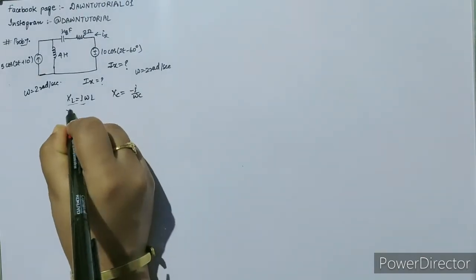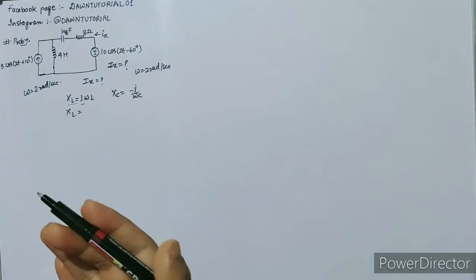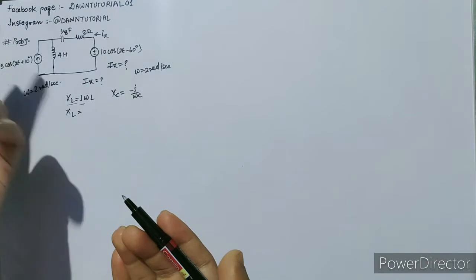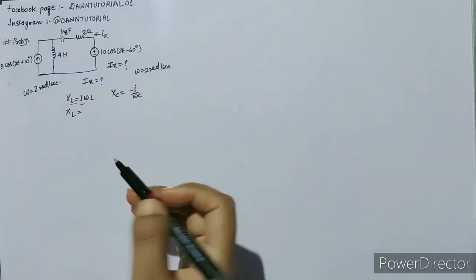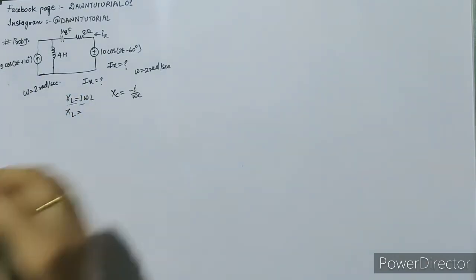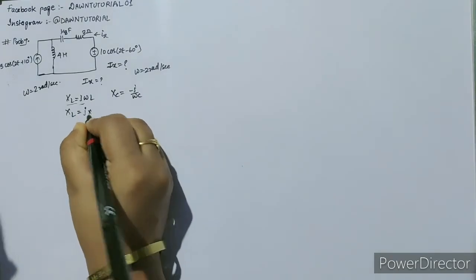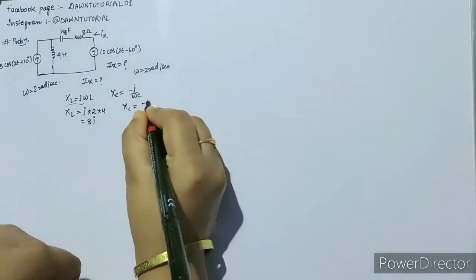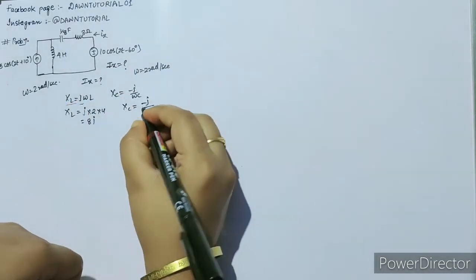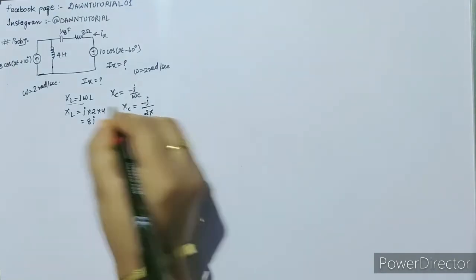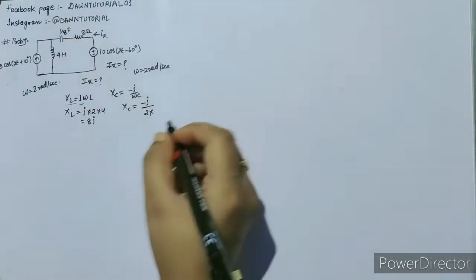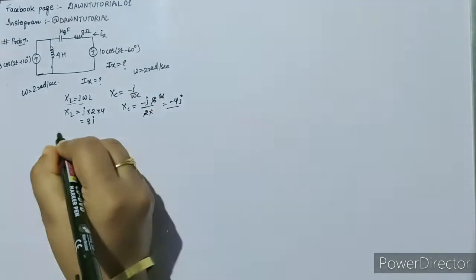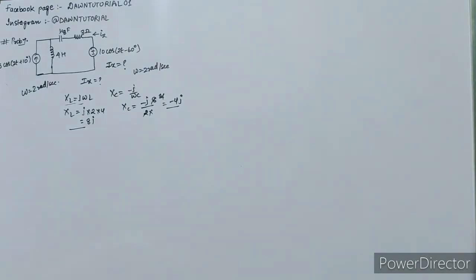So XL value at omega equals 2 radian per second is j times 2 times 4, which is 8j. And XC will be -j divided by omega times C, which is -j/(2×4), so this is -4j. So we have XL and XC values.